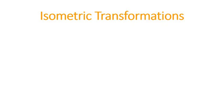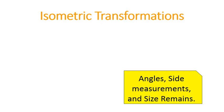Isometric transformations are types of transformations where the angles, side measurements, and the size of the figure remains the same. Those three things do not change when you make an isometric transformation.